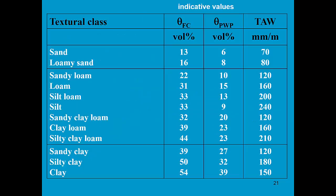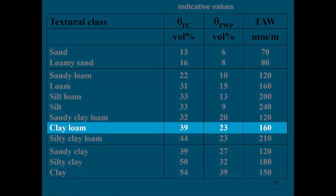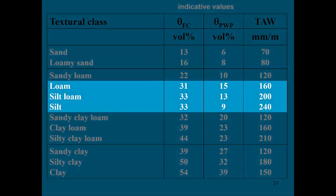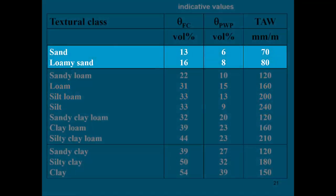Here are some indicative values for the various texture classes. For a clay loam soil, the volumetric water content at field capacity is 39 volume percent and at wilting point 23 percent. The corresponding tau for a rooting depth of 1 meter is 160 millimeters per meter. Loamy soils have a higher tau of 200 to 250, while sandy soils with their low field capacity and wilting point have a small tau of less than 100.